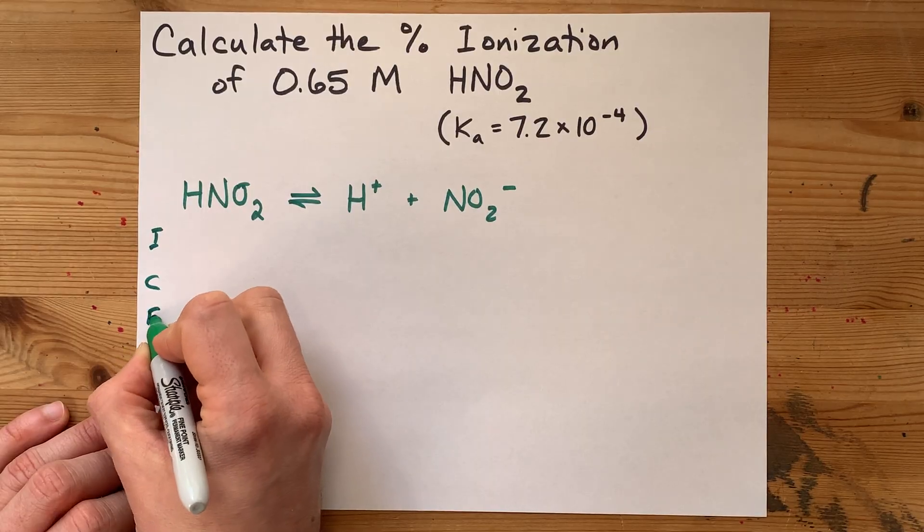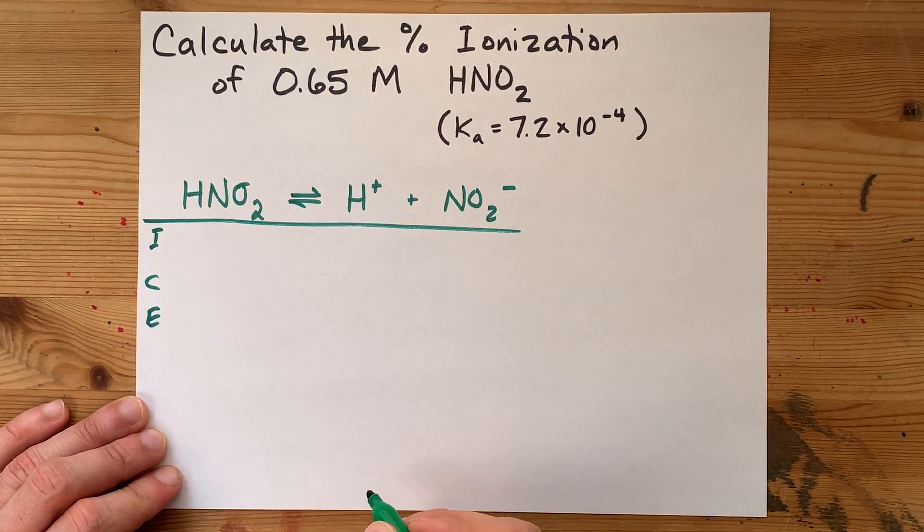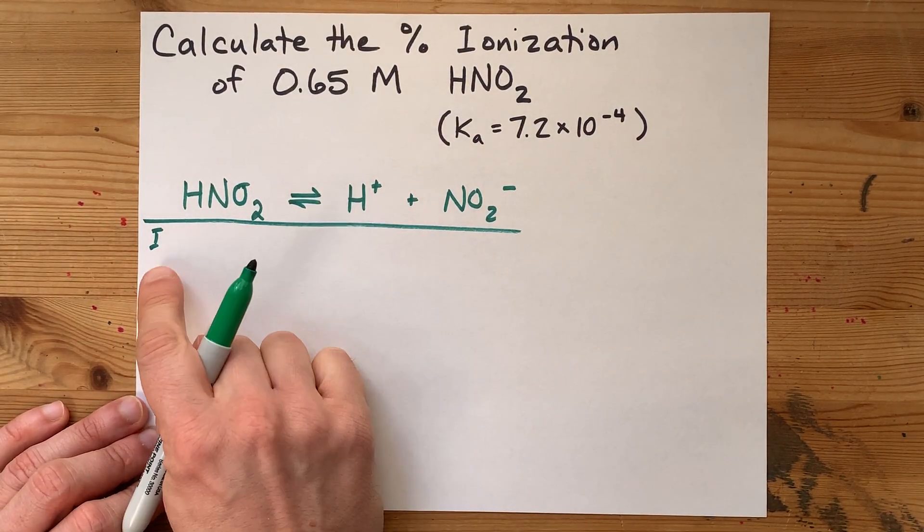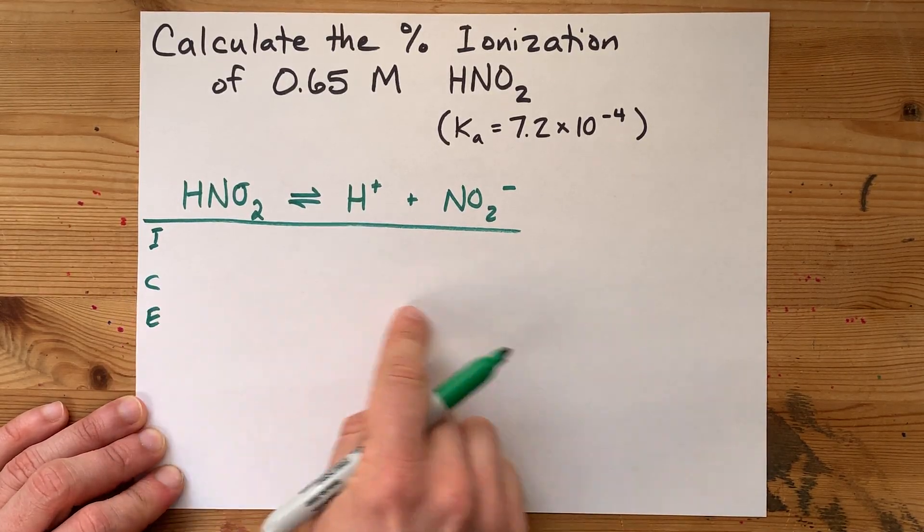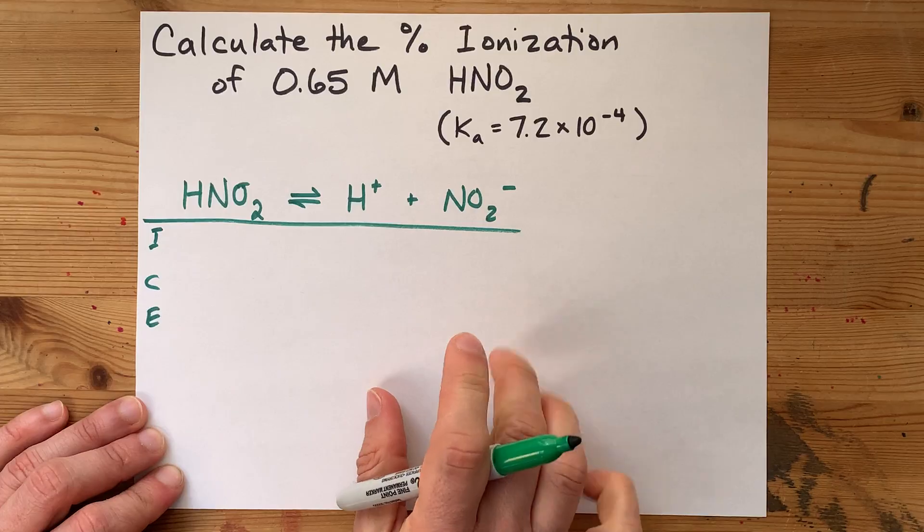Now I'm going to set you up an ICE table, but there is a shortcut to get here. An ICE table gives you the initial concentration of each of these, the change, and the equilibrium concentration of each.